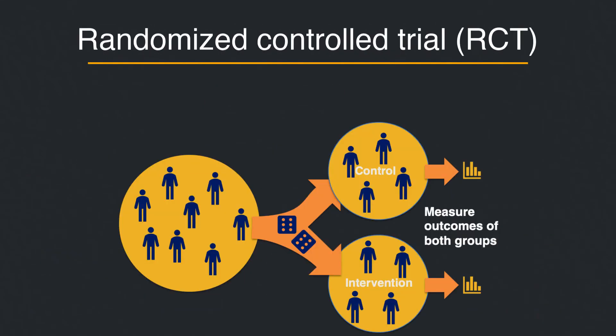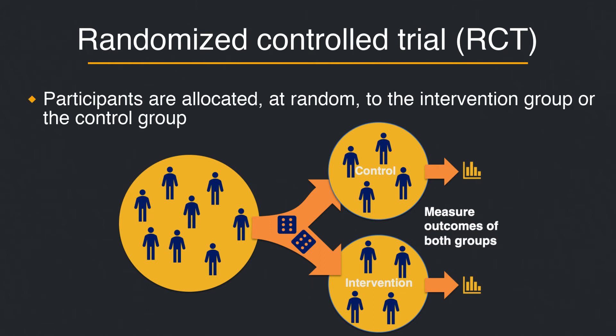A common experimental design is the randomized control trial, also referred to as RCT. In this design, participants are allocated at random to the intervention group or the control group. They are monitored and their outcomes are measured.